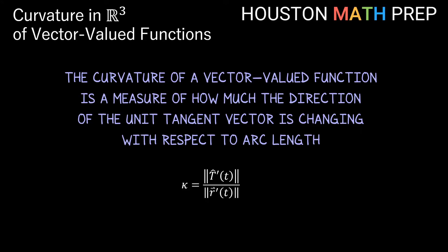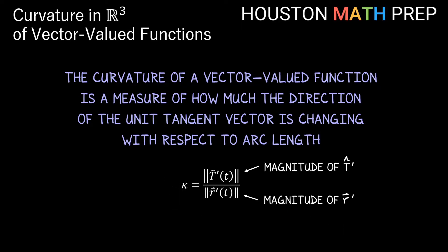In general, for vector-valued functions, our formula for curvature is based on the magnitude of change of the unit tangent with respect to arc length. This formula compares the magnitude of T̂-prime to the magnitude of r-prime. We often see curvature abbreviated with a curly k or kappa symbol in math from the Greek.